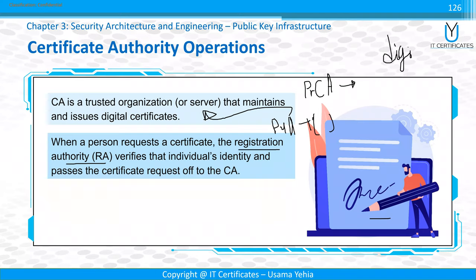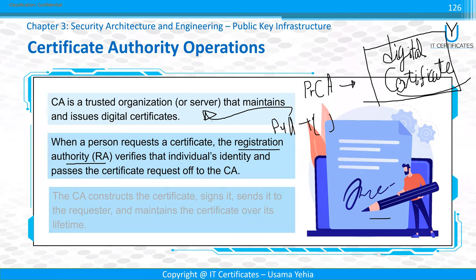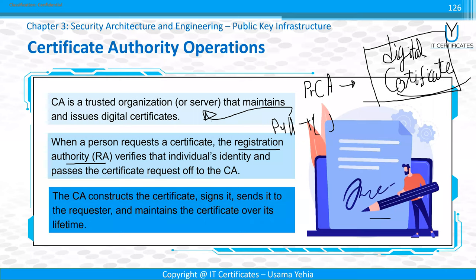When you are using HTTPS, you need a certificate — a digital certificate that has a public key of the server, confirmed and checked by the CA that this is really the user or service it claims to be. The CA constructs the certificate, signs it, sends it to the requester, and maintains the certificate over time — for example, valid for three years — until it expires.